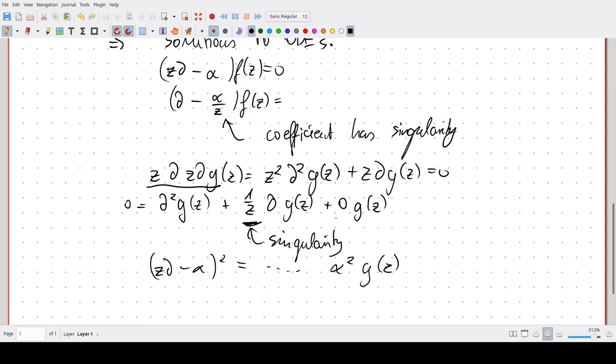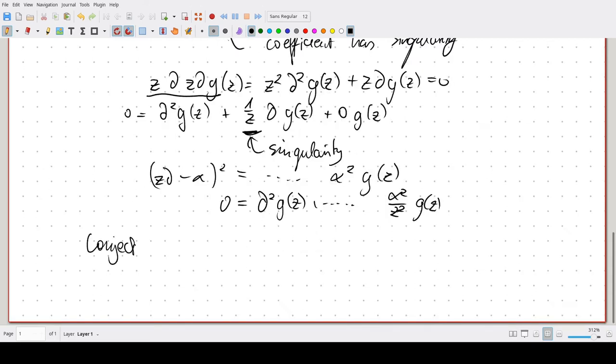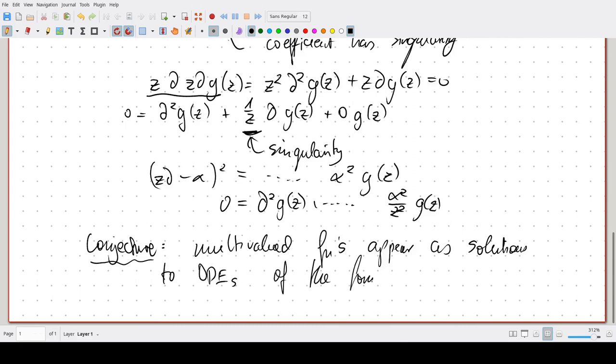And when we divide through by z squared which we still get, we get like second derivative blah blah blah and then alpha squared divided by z squared g of z. So what we observe or what we might formulate into a conjecture here are multivalued functions here as solutions to ODEs of the form...